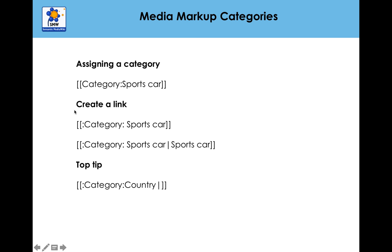Just as a summary: assigning a category — double brackets, 'Category:', and whatever you want to call the category. Creating a link — put the colon in front. Believe me, you will make that mistake; it happens all the time. And if you want it to display differently, you can just display it as 'sports car' using the pipe.